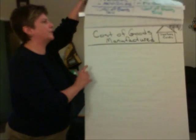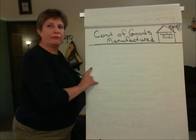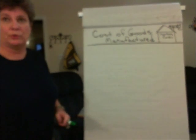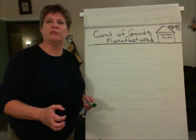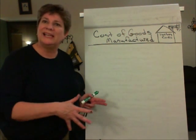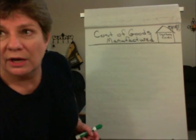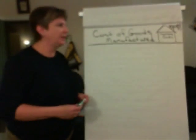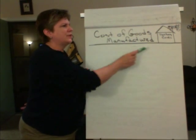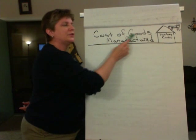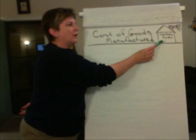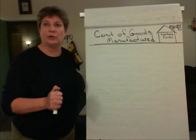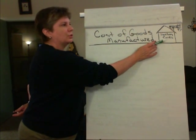Let's talk about what's different. What is different is the calculation of cost of goods manufactured. We saw it on the cost flows. Cost of goods manufactured is the cost of the units completed during the period — the costs of the units that came out of work in process inventory because they were finished during the period. Cost of goods manufactured is going to be all of the costs incurred in the factory to complete units during the period. So, cost of goods manufactured are factory costs.